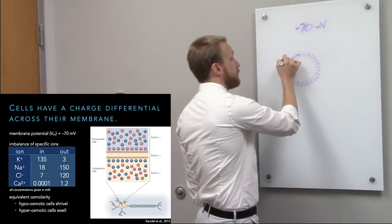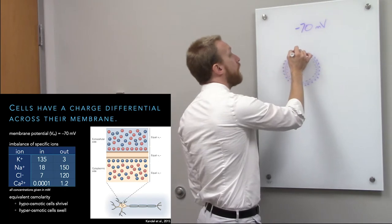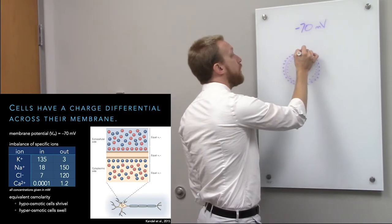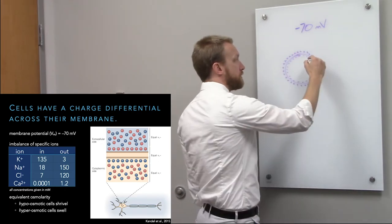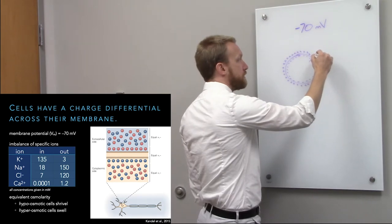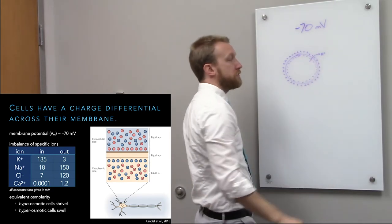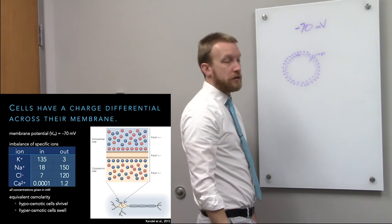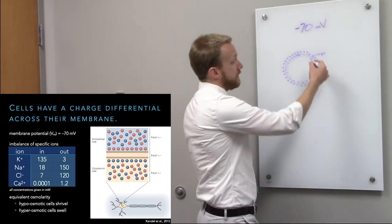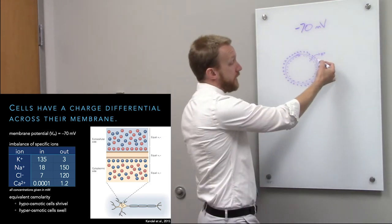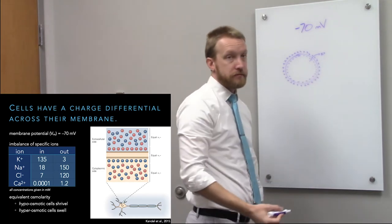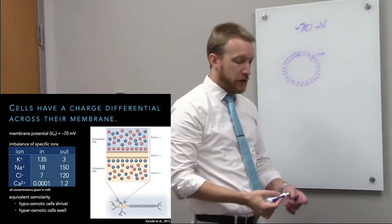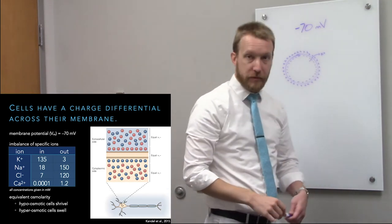Spoiler alert: it's because we always leak potassium. There's always this movement of potassium out of the cell, and potassium has a positive charge. That potassium lines the membrane, and the positive charge on the outside attracts negative charge from the inside — and that creates the negative membrane potential.